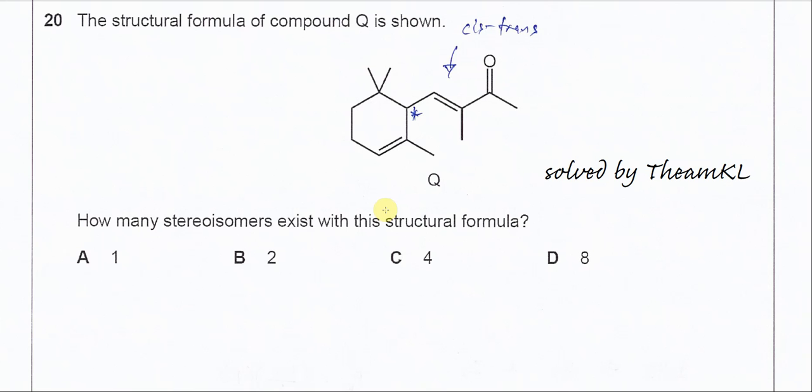Question 20. Compound Q is given. How many stereoisomers exist in this structure? Stereoisomers we know are always cis-trans or optical, and they always come in pairs.